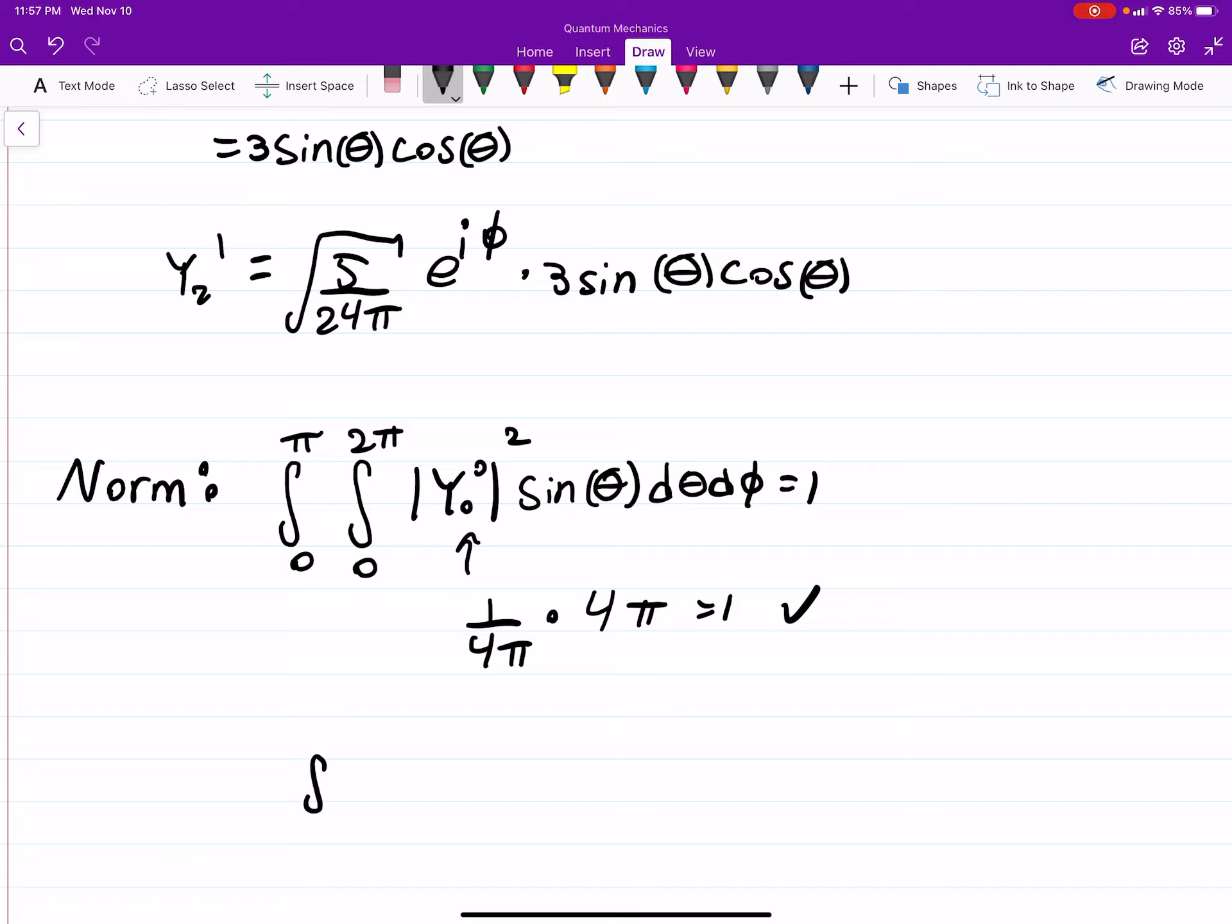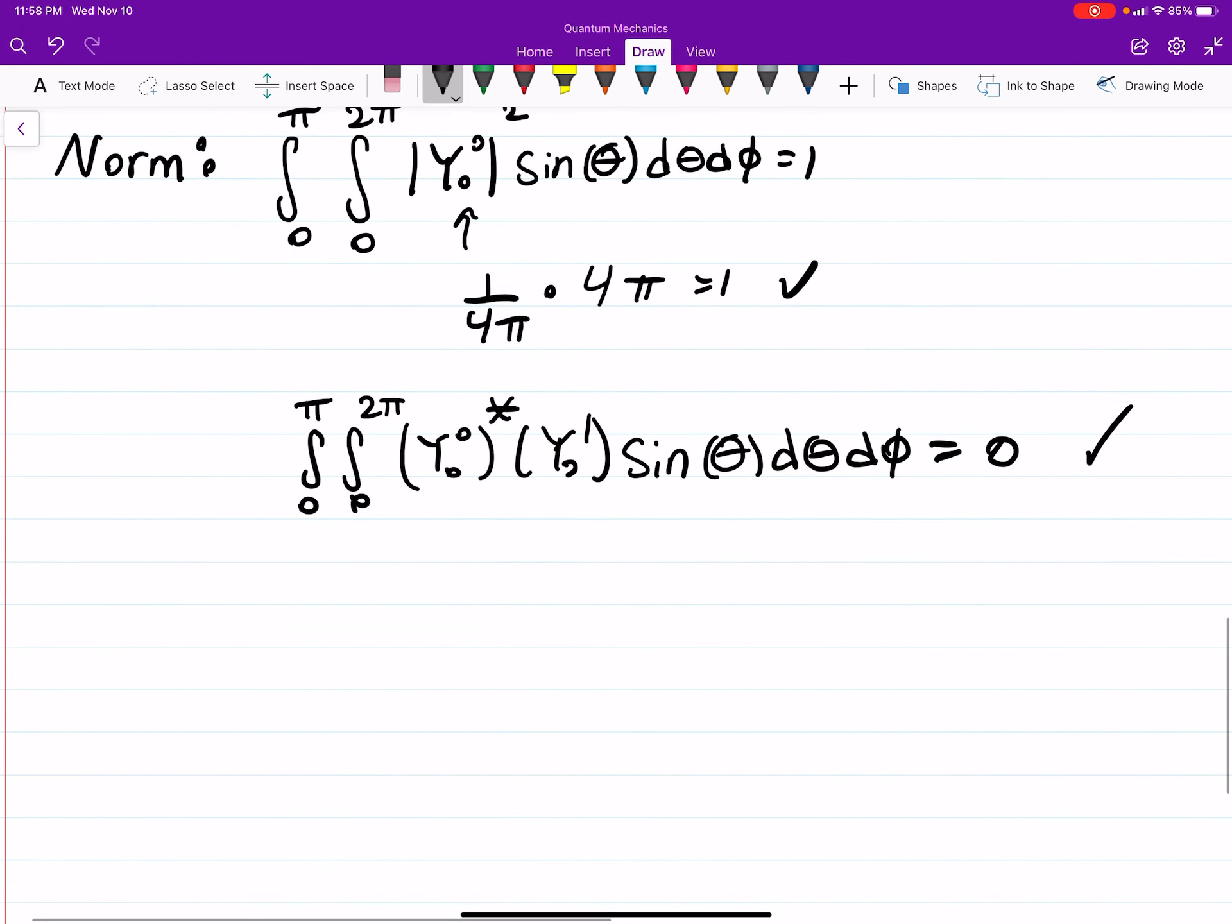To see that they're orthogonal, so these are orthonormal, same idea but we're going to take the complex conjugate. Integrate sine theta dθ dϕ, and this should equal zero if they're orthogonal. The complex conjugate of 1 over the square root of 4π is just 1 over the square root of 4π, that doesn't change. So if you plug that in you find that they are in fact orthogonal.